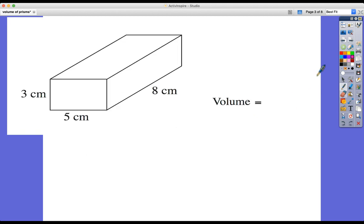The next one, without the cube shown, but still as easy. Let's do it. So three centimeters times by five centimeters times by eight centimeters, which is 120 centimeters cubed. Nice and easy.